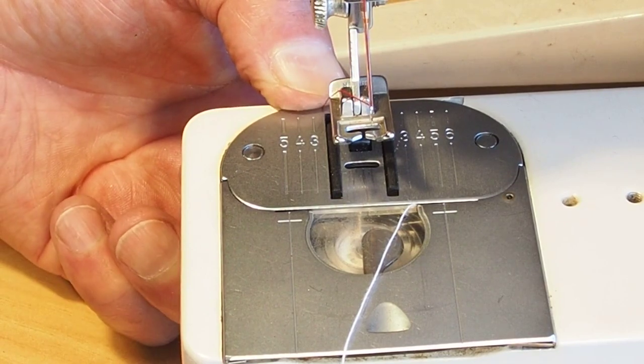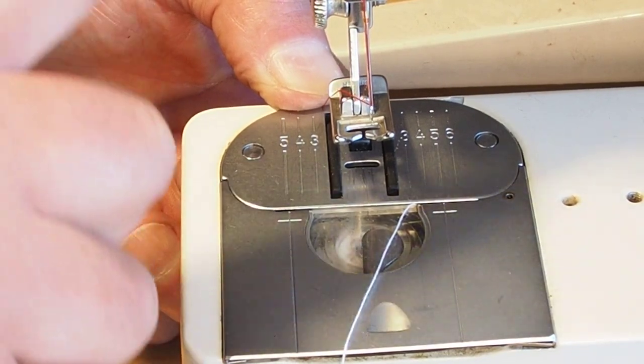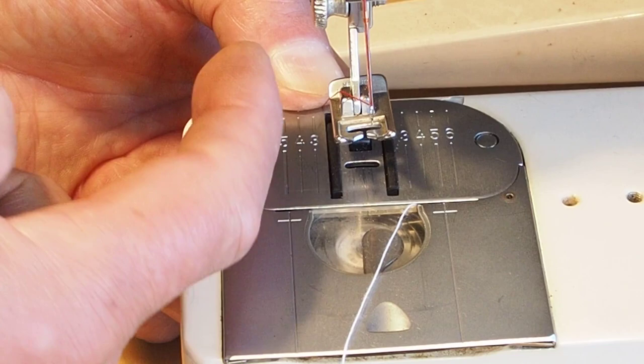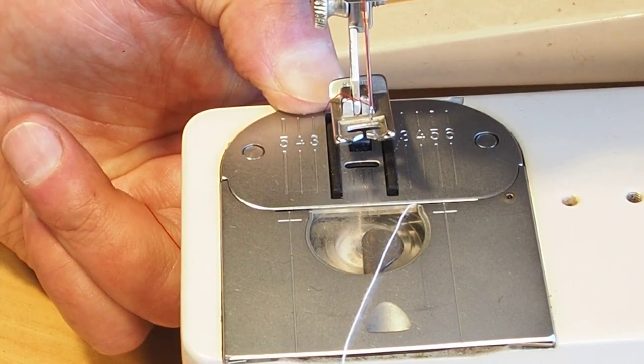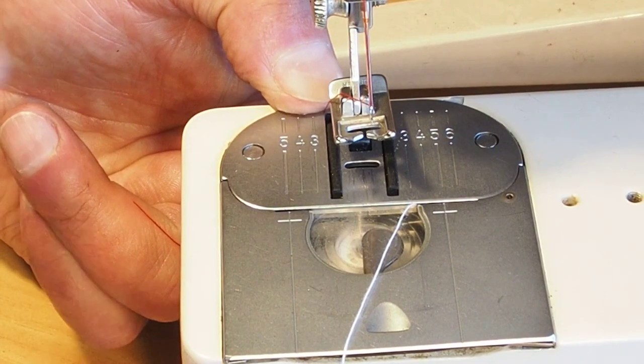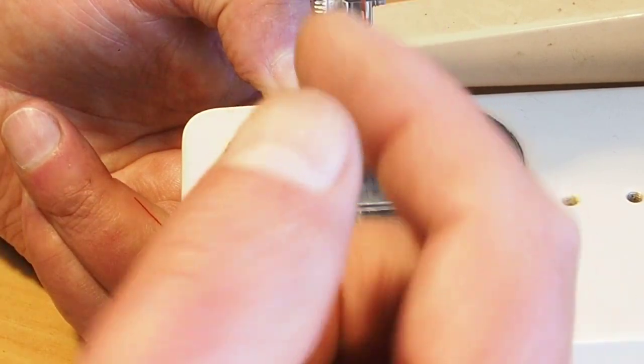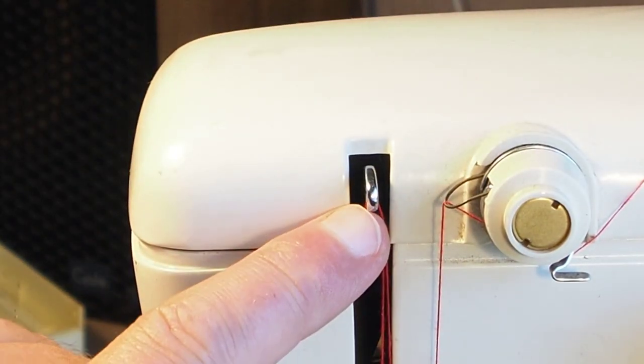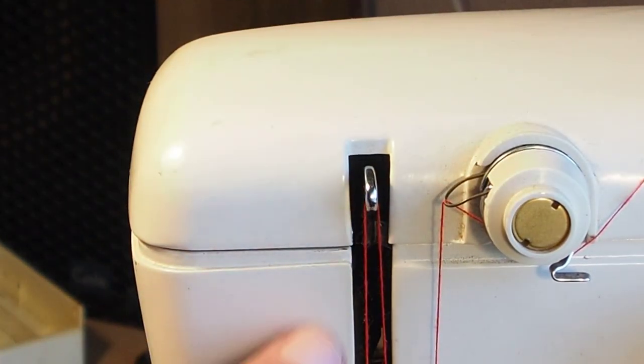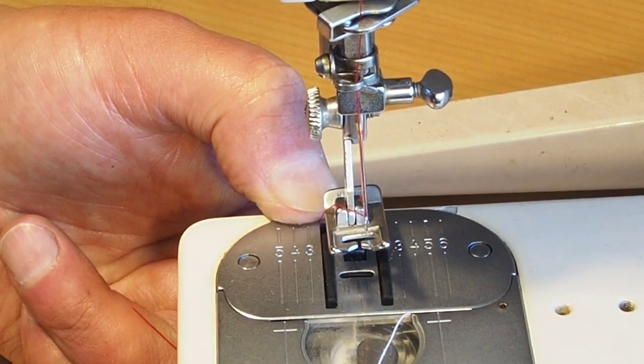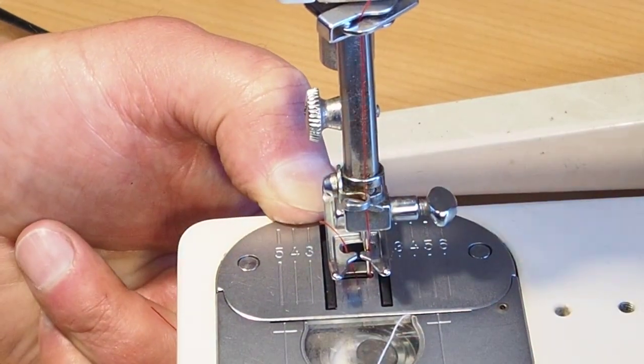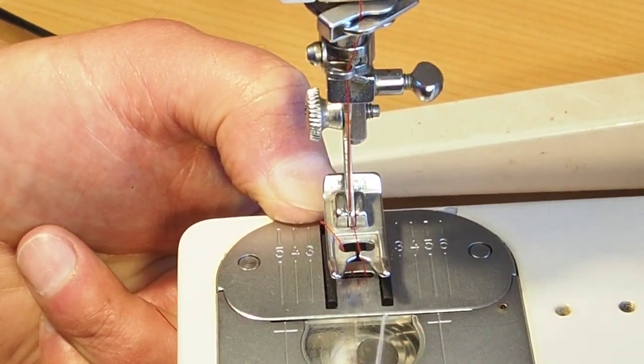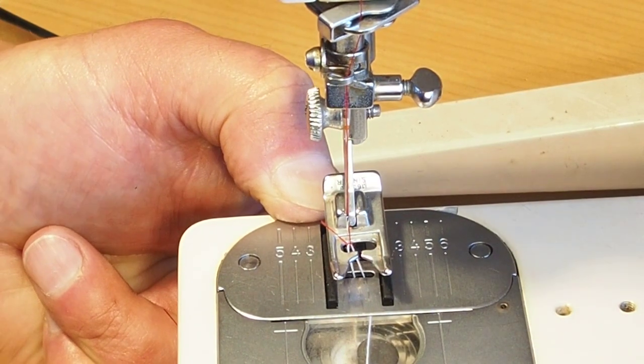You can just hold it at the back behind the needle. The thread should run down through the guides, straight through the needle eye, and then hold the needle thread against the bed of the machine and turn the machine one revolution so that the take-up lever goes down and back up again to the top. Make sure you turn it in an operating direction. Just one revolution there.